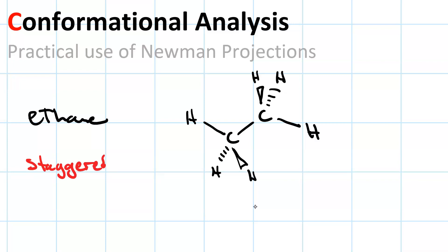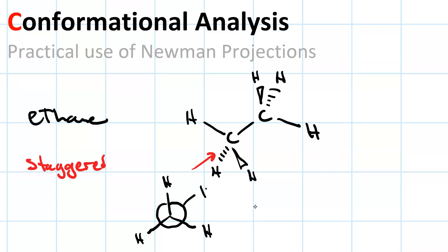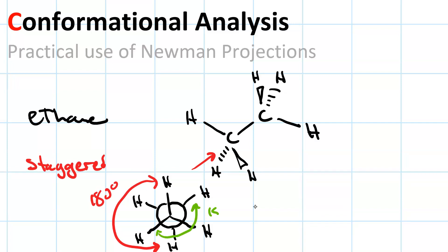It's really easy to see a staggered conformation when using a Newman projection. Looking from the left-hand carbon toward the right-hand carbon down the bond, the front carbon looks like this and the back carbon looks like this. Now you can see these torsion angles are 180 degrees.